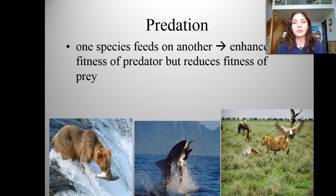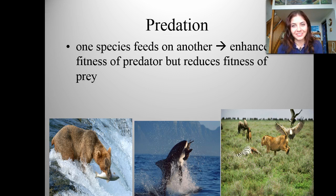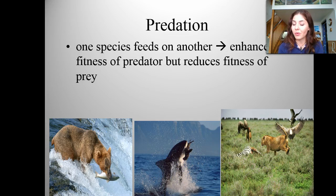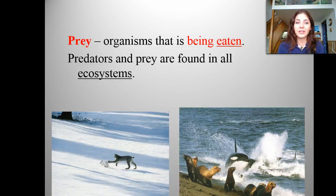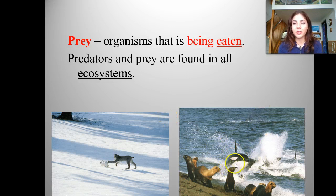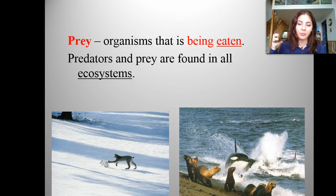Predation is the next type of relationship. This is when one species feeds on another — it enhances the fitness of the predator and reduces the fitness of the prey, because the prey is dead. Examples would be a grizzly bear with salmon, a great white shark eating a seal, and a lioness killing a zebra. Predators and prey are found in all different types of ecosystems — a bobcat hunting a snowshoe hare, and a killer whale purposely beaching itself to grab a pinniped.